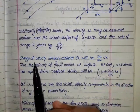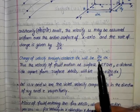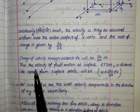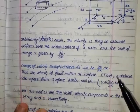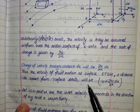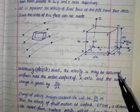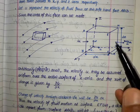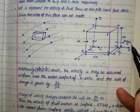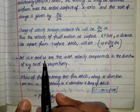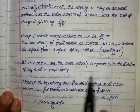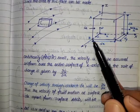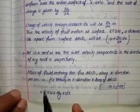The change of velocity through distance dx is (∂u/∂x)·dx, and u remains constant through the entire surface. Thus the velocity at surface EFGH, a distance dx apart from surface ABCD, is u + (∂u/∂x)·dx. Let u, v, and w be the inlet velocity components in the directions of x, y, and z respectively.